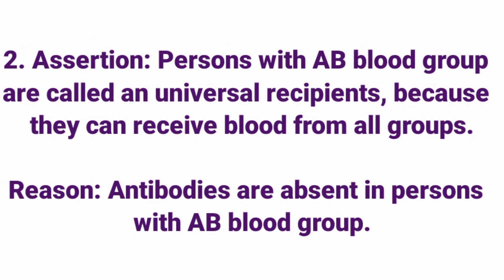Question 2: Assertion — Persons with AB blood group are called universal recipients because they can receive blood from all groups. Reason — Antibodies are absent in persons with AB blood group. Both are true and R correctly explains A. Answer: Option A.